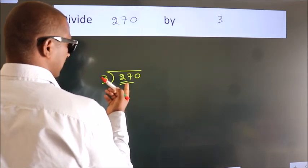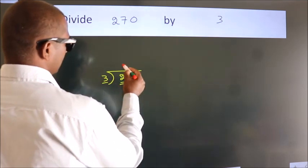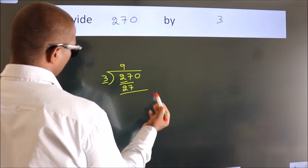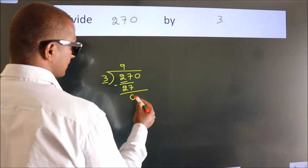When do we get 27? In 3 table. 3 nines, 27. Now, we should subtract. We get 0.